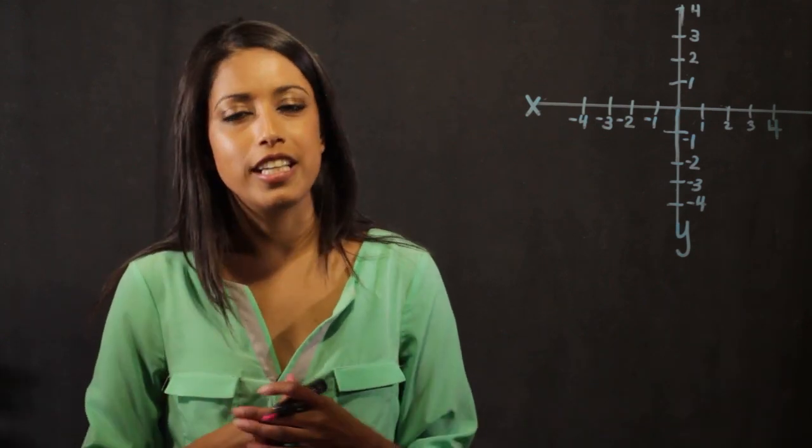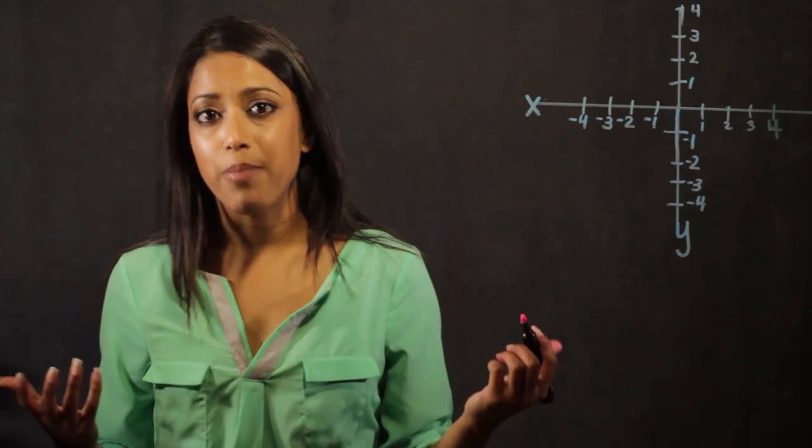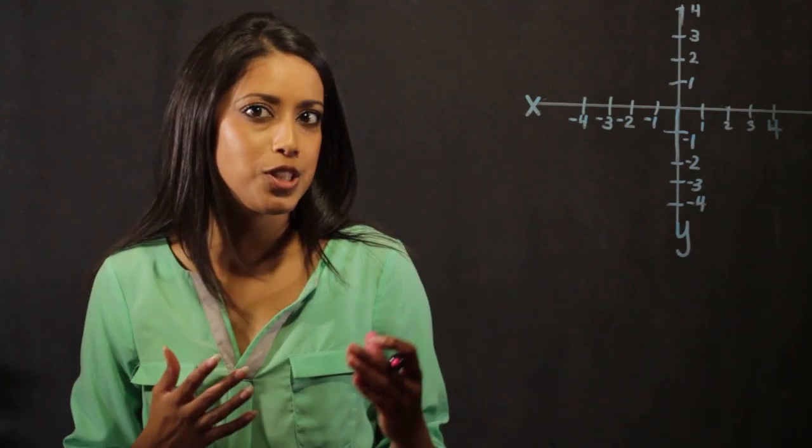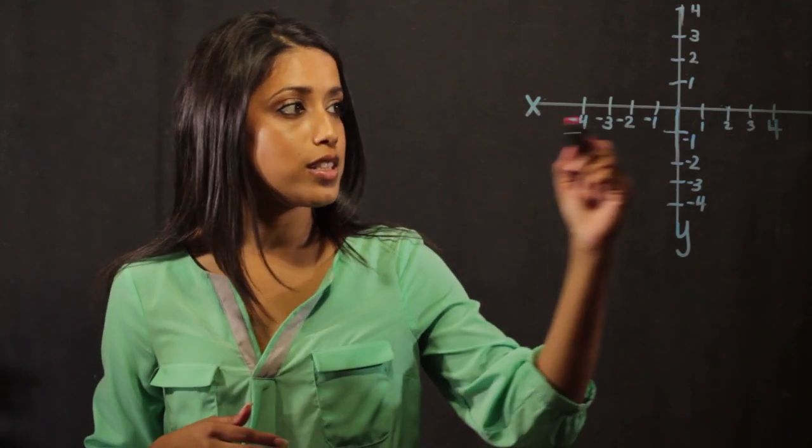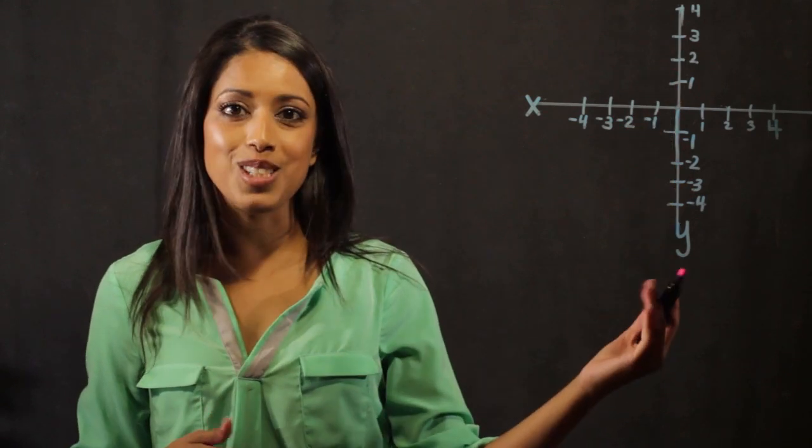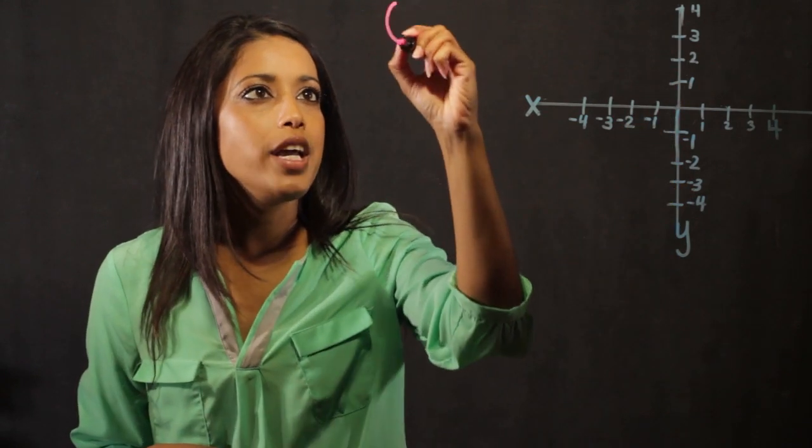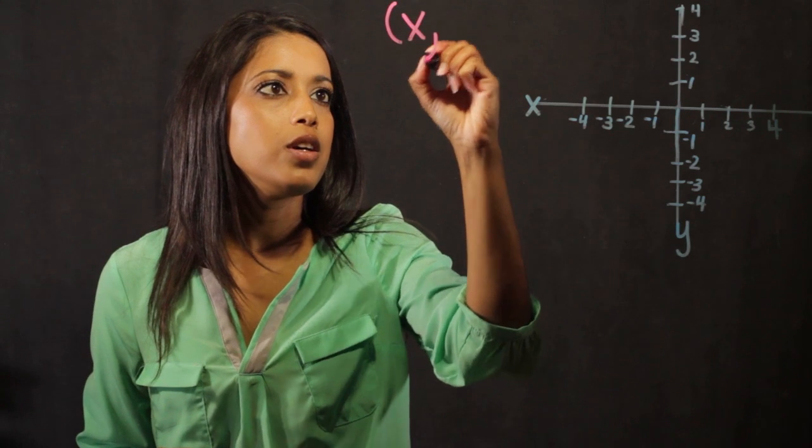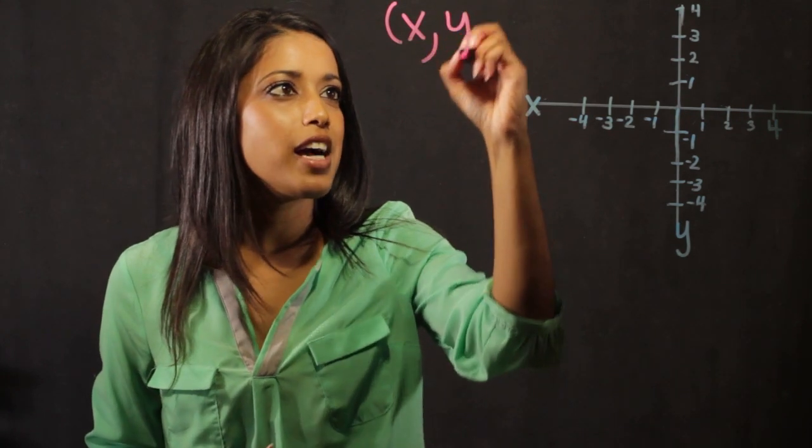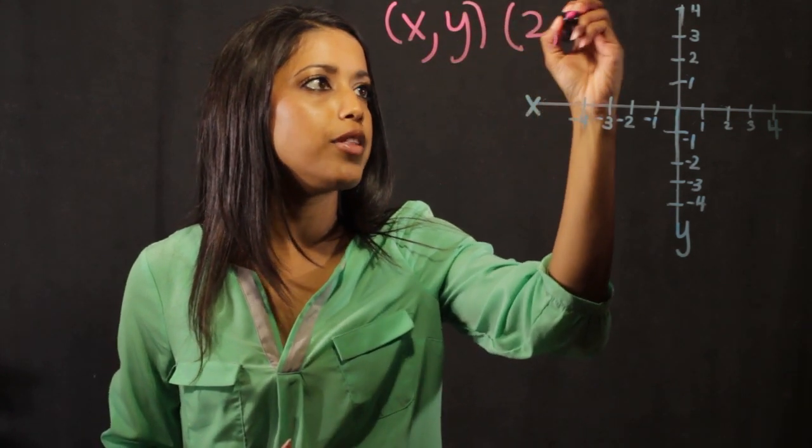Essentially, an ordered pair is two numbers separated by a comma. What we use these two numbers for is to graph on an x-y coordinate system. We have an x-y coordinate system right here. When we have numbers, they are separated by a comma. We're going to take the example two comma three.